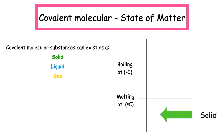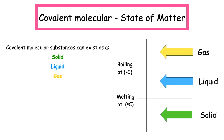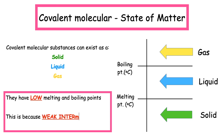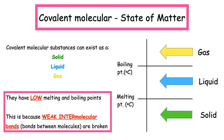Covalent molecular substances can exist as a solid, a liquid or a gas. They have low melting points and boiling points because the weak intermolecular bonds — the bonds between the molecules — are broken.